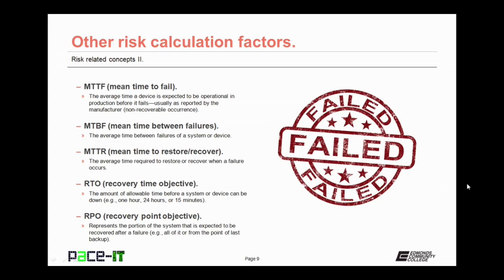And finally we have the RPO, the recovery point objective. This represents the portion of the system that is expected to be recovered after a failure — for example, that it's expected you will be able to recover everything from the point of the last full backup or maybe from the last incremental backup.